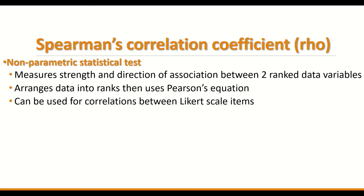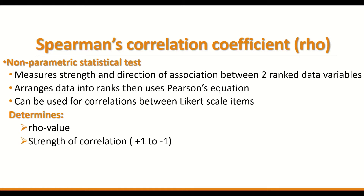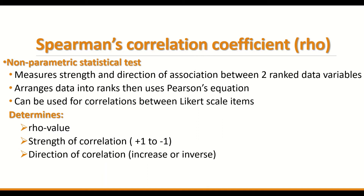It can be used for correlation between Likert scale items. The test determines the Rho value for a correlation between two variables and determines the strength of the correlation on a scale of minus 1 to plus 1. Plus 1 is the strongest positive correlation; minus 1 is the strongest inverse correlation. It also determines the significance of this association by producing a P value.